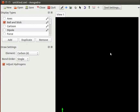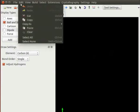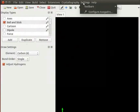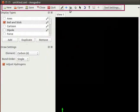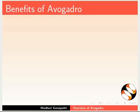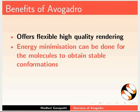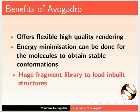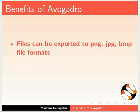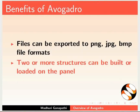This is the Avogadro interface. It has a standard menu bar with menu items — we will learn about each in detail in the series. Below the menu bar, we have various toolbars. Now we will see the benefits of Avogadro: it offers flexible high quality rendering; energy minimization can be done for molecules to obtain stable conformations; it has a huge fragment library to load inbuilt structures; files can be exported to PNG, JPG, and BMP formats; and two or more structures can be built or loaded on the panel.